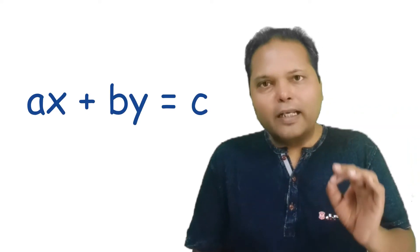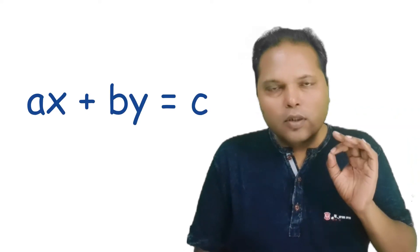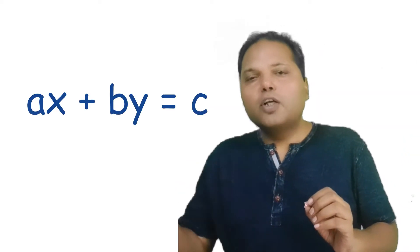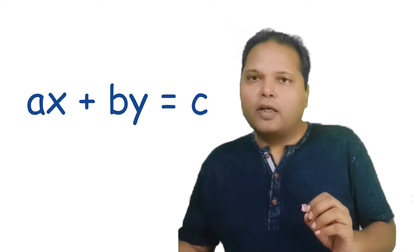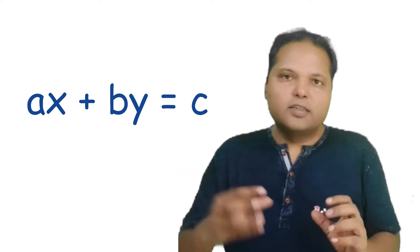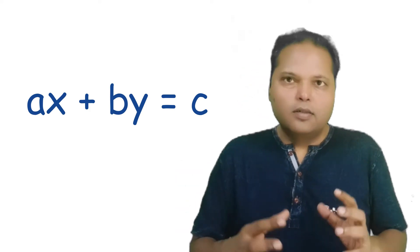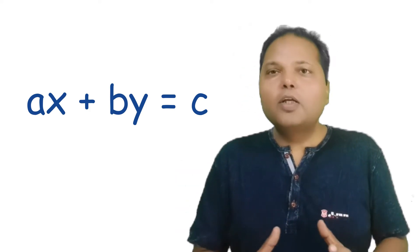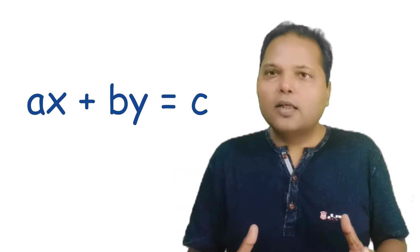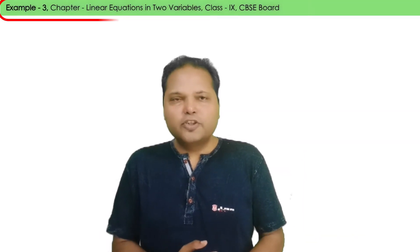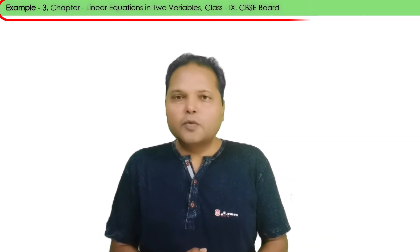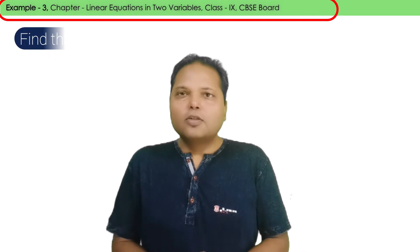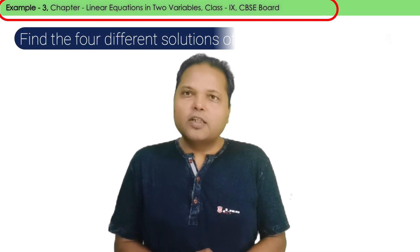Because for every value of x, there is a corresponding value of y and vice versa. This is example number 3, chapter: linear equations in two variables.